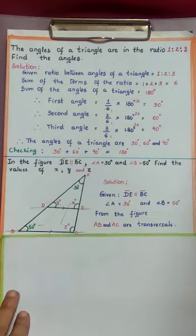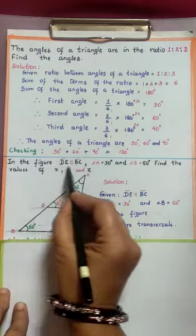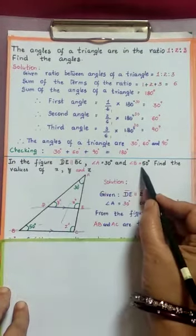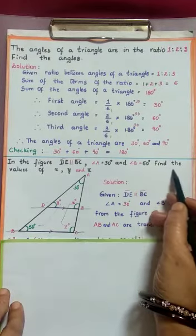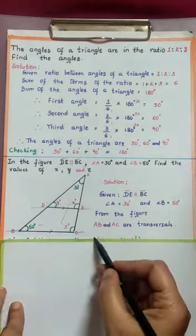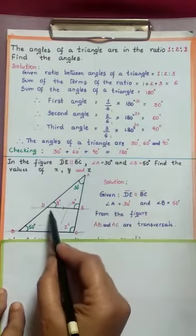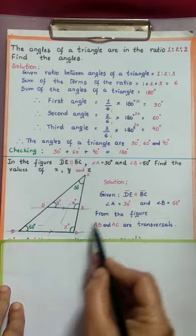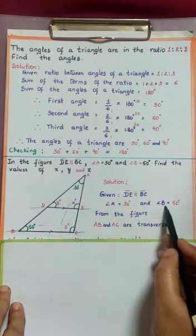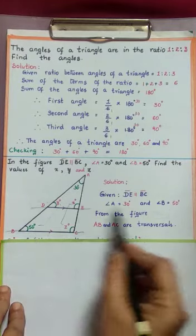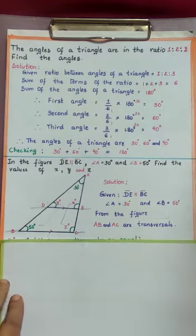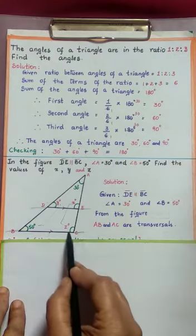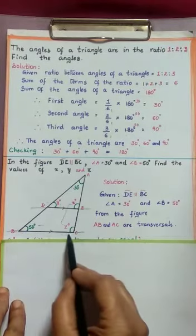Now see the second problem. In the figure, DE is parallel to BC. Angle A is equal to 30 degrees and angle B is equal to 50 degrees. Find the values of X, Y, Z. Here ABC is a triangle. From this figure, DE is parallel to BC. Observe the arrowhead lines — these two lines are parallel.